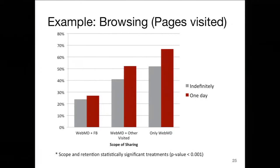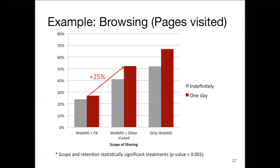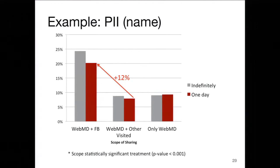Looking specifically at the browsing category — what pages you visited — we see that when comparing indefinite versus one-day retention on WebMD, people are 15 percent more likely to share if data is only retained for one day. When shared with other sites, that difference is 11 percent. We also see differences based on extent of sharing: people are 25 percent more likely to share if it's going to be disclosed to other sites you visit than if it's going to be disclosed to Facebook, and even more likely if it's only going to be used by WebMD.